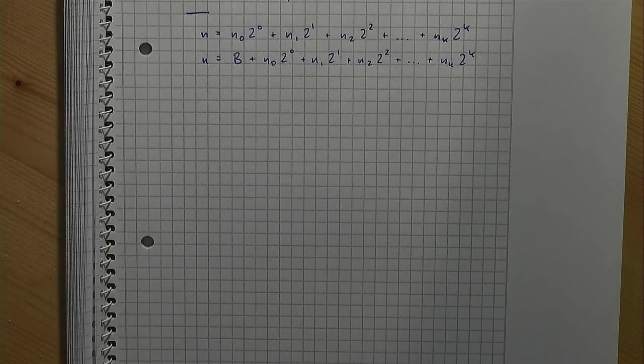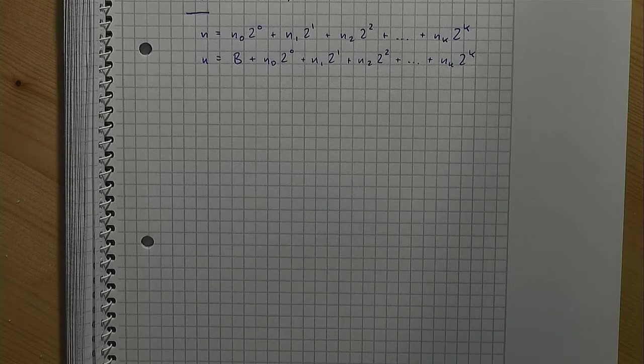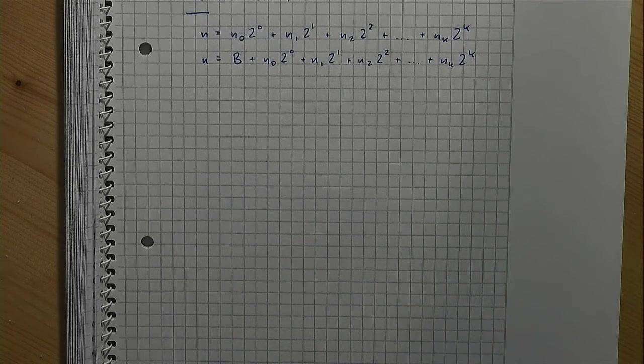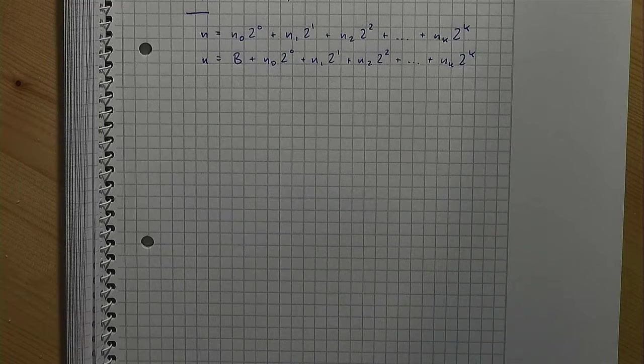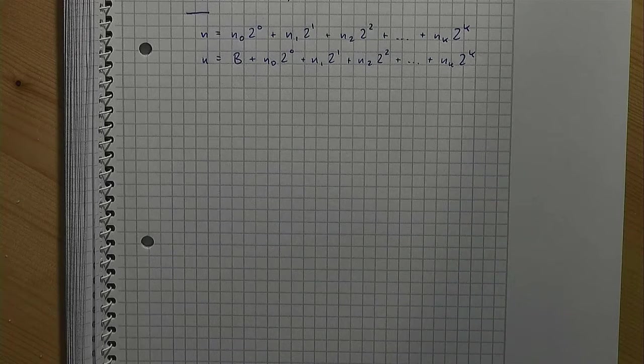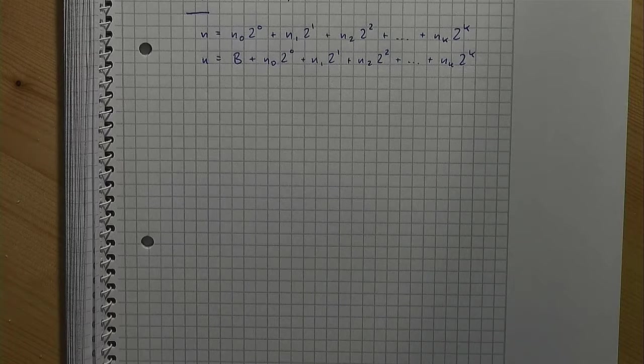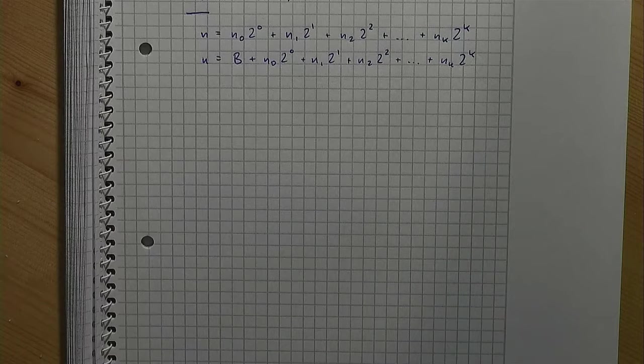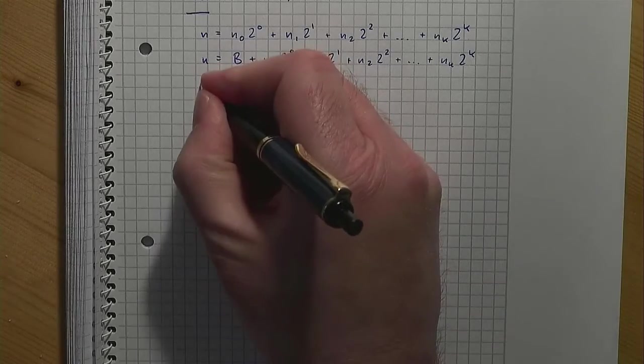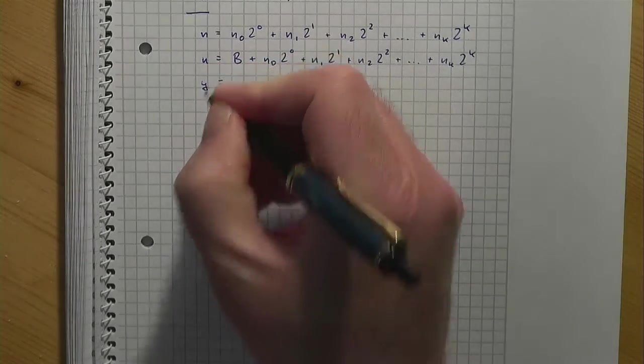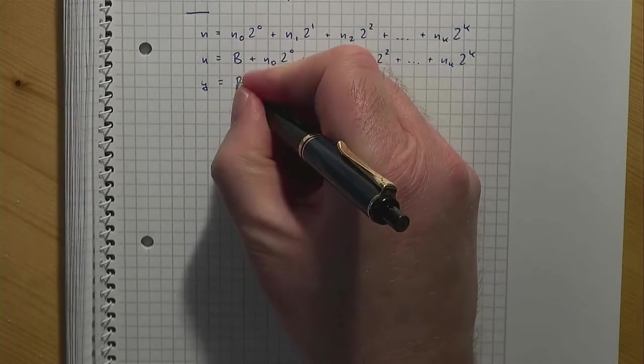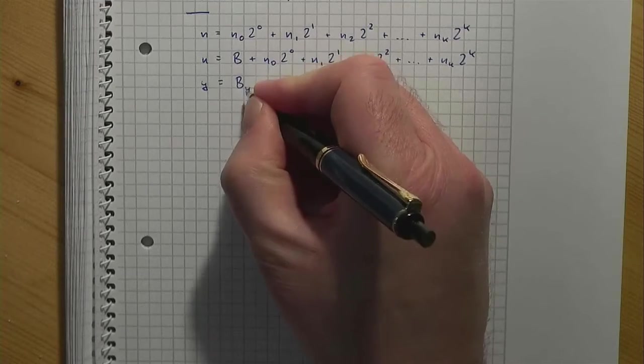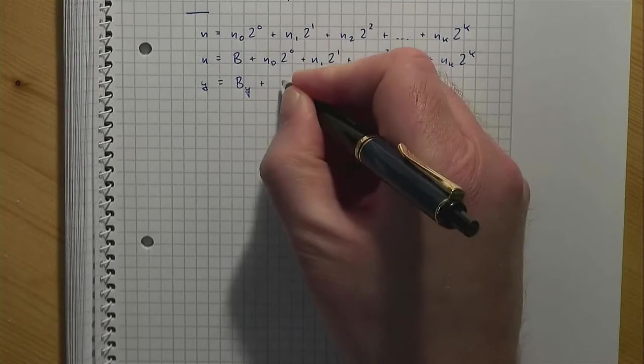As before, the ni's are unique values equal to 0 or 1. We can now think of decision variables, say y and z, which represent integer values. If we, more or less, copy the notation from above, we could write y is equal to b_y plus...